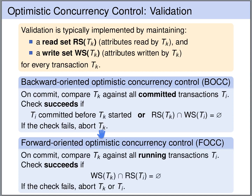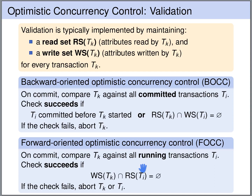In forward-oriented optimistic concurrency control, the check proceeds differently. We compare the transaction Tk that wants to commit against all currently running transactions Ti — not committed ones, but running ones, so we look forward. We check whether the write set of Tk has an overlap with the read set of the still-running transaction Ti. If so, Ti may have read an old value if we allow Tk to commit, so there is a conflict. In the forward-oriented approach we have a choice: either we abort Tk, or we resolve the conflict by aborting Ti. If we abort Ti, we can still commit the changes of Tk to the database.